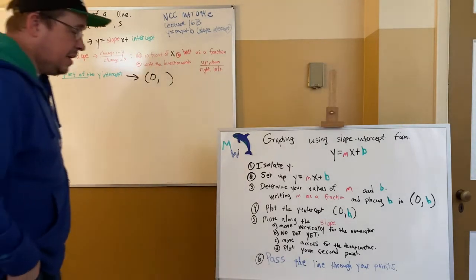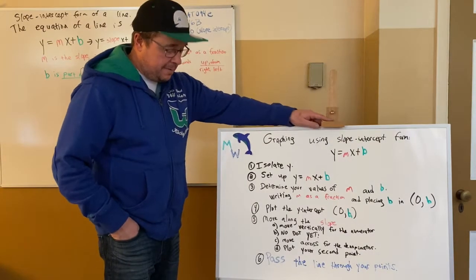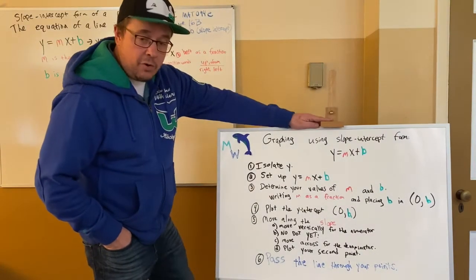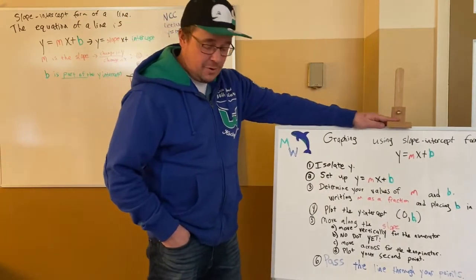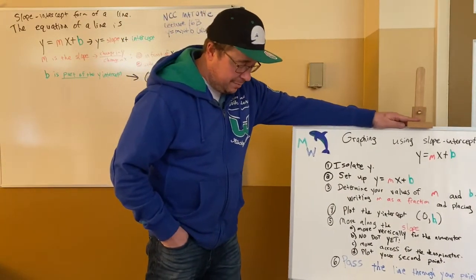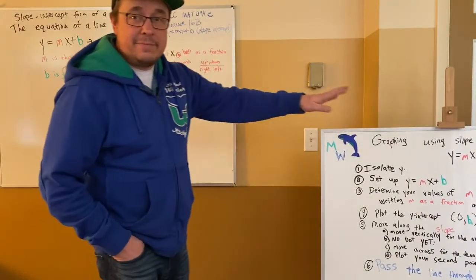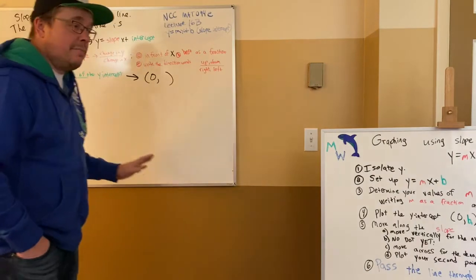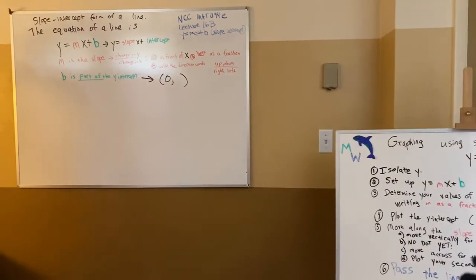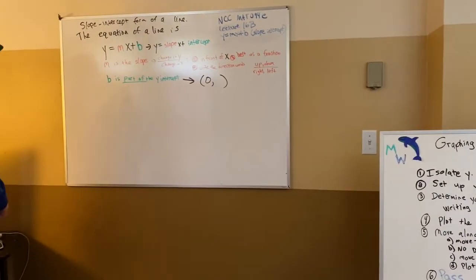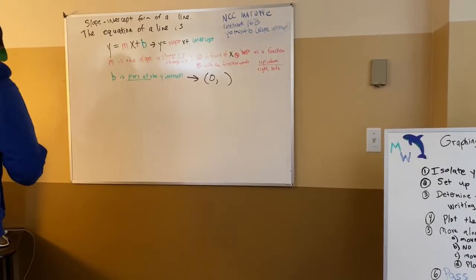If you do it right, it's quick. If you do it wrong, it's also quick — and it'll feel right either way. That's the problem: you're going to feel like you got it right even if you didn't. So isolating y is a big deal. Let's get some of these done.